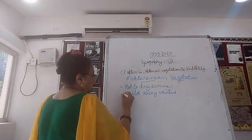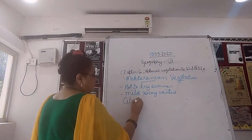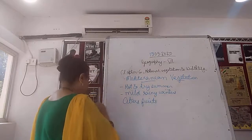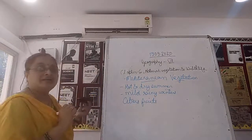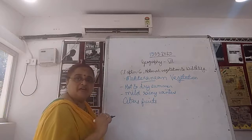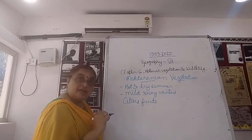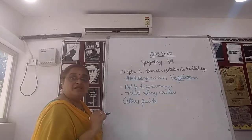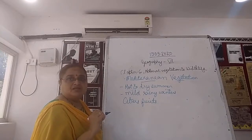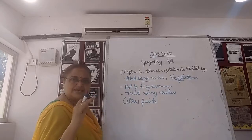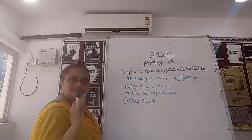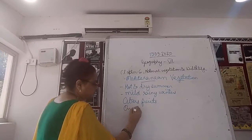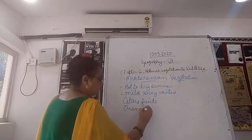The kind of vegetation found here — the fruits you find here — we find citrus fruits in abundance. What comes under citrus — the sour fruits? Orange, fig, olive, and grape are cultivated here in large quantities, because people have removed the natural vegetation and cleared the forest areas to grow these things.